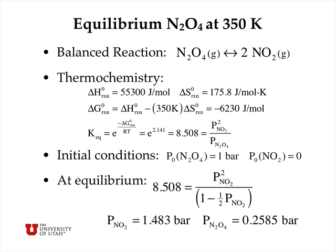The equilibrium constant for the reaction is e to the minus ΔG° of reaction divided by RT, where T now is 350 kelvins, and so that's e to the 2.141, or 8.508. And remember that's equal to the ratio of partial pressures of the products divided by the reactants, and because we have two moles of NO2, we have to square that pressure.